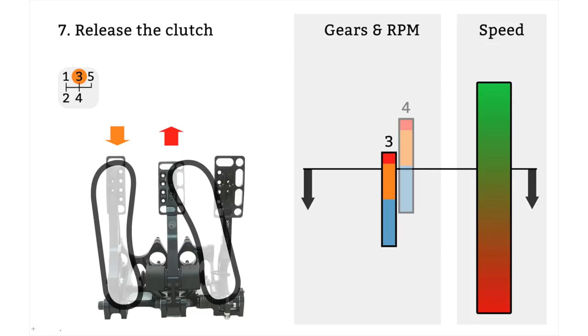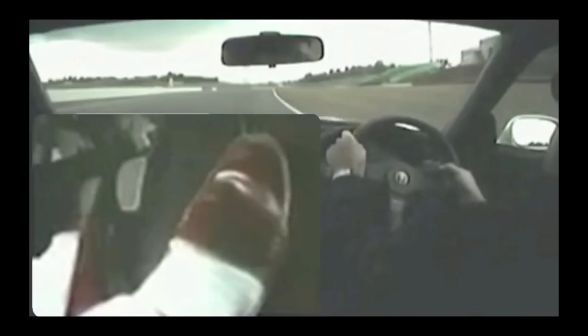So who better to show us how to heel and toe other than the one and only Ayrton Senna. Now you'll have to excuse the footage the quality isn't the best but it is from 1992 and this guy's socks and shoes are just incredible so we're going to use it. As you can see here on the left hand side of the screen we have the accelerator, the brake and the clutch.